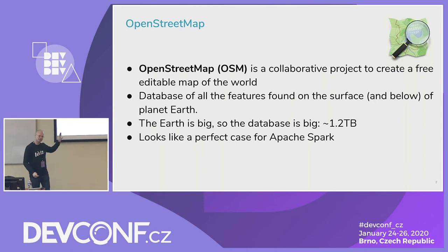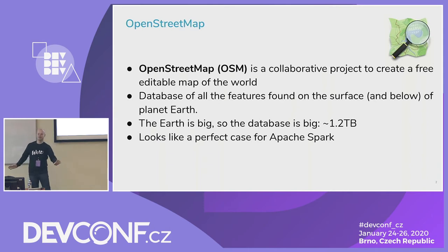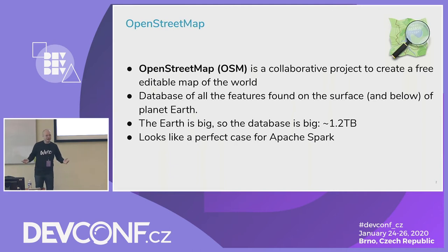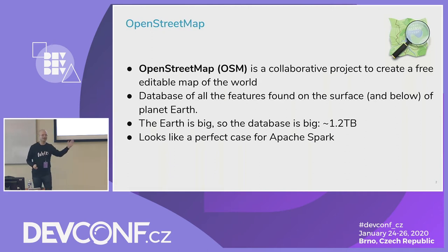You can't really use Wikimapia. But OpenStreetMap is completely different. It's a database of all the features on the planet Earth — somehow connected to the Earth. So it can even be below the Earth. Right now it's just OpenStreetMap.